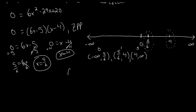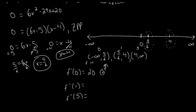f prime of 0: plugging in 0 for x, the 6x squared and 29x terms evaluate to 0, leaving us with 20. That's positive 20. This implies that on the interval negative infinity to 5/6, f is increasing, because the test value returned a positive result.